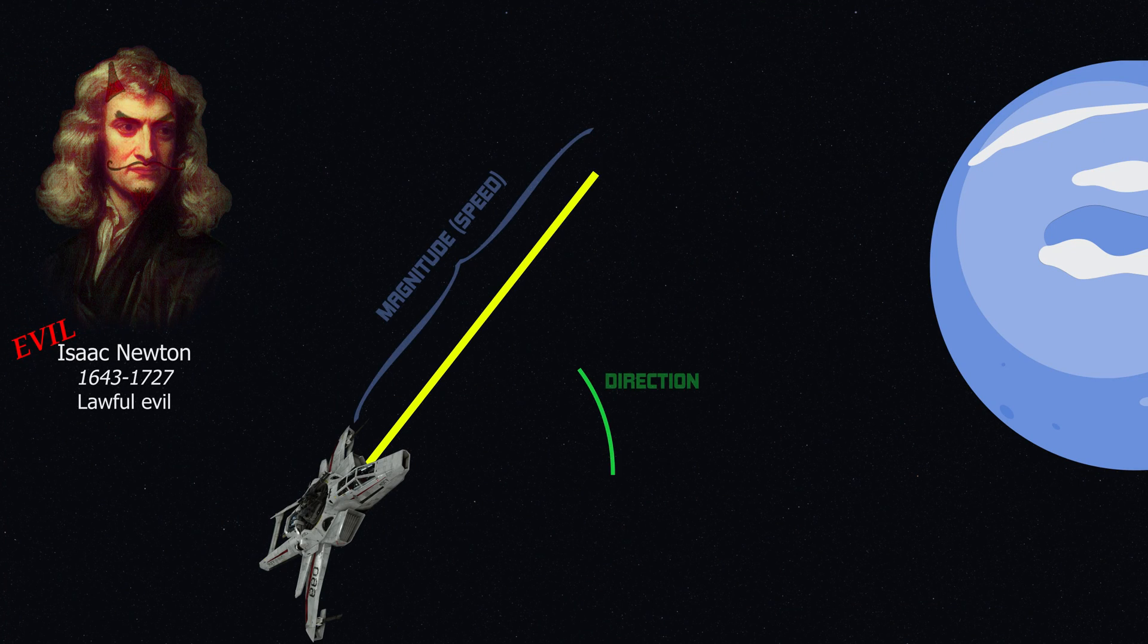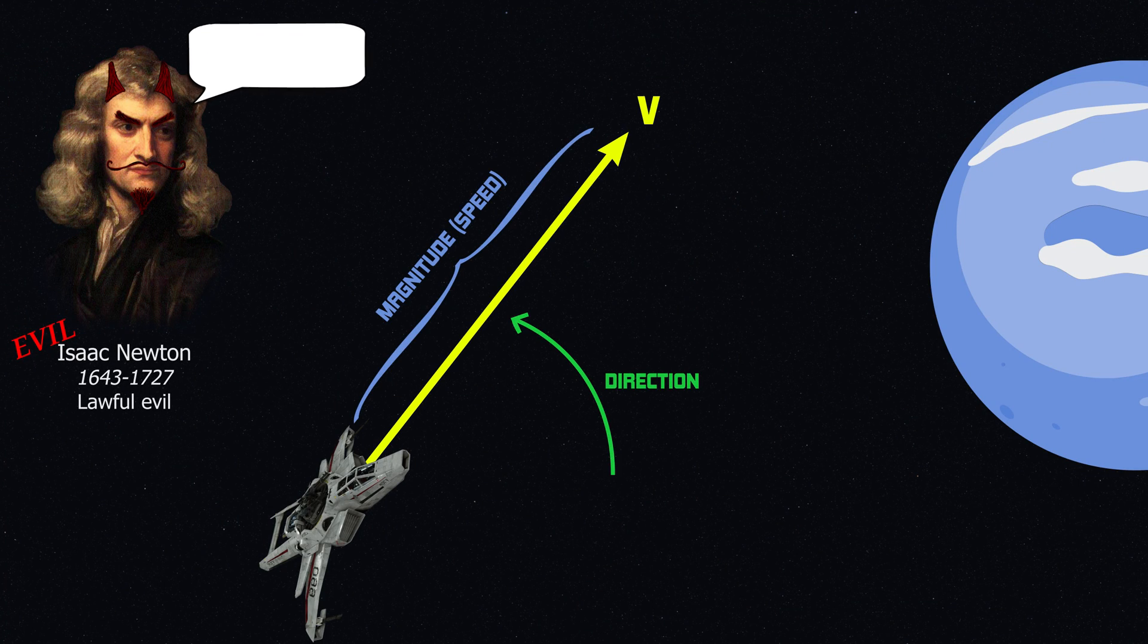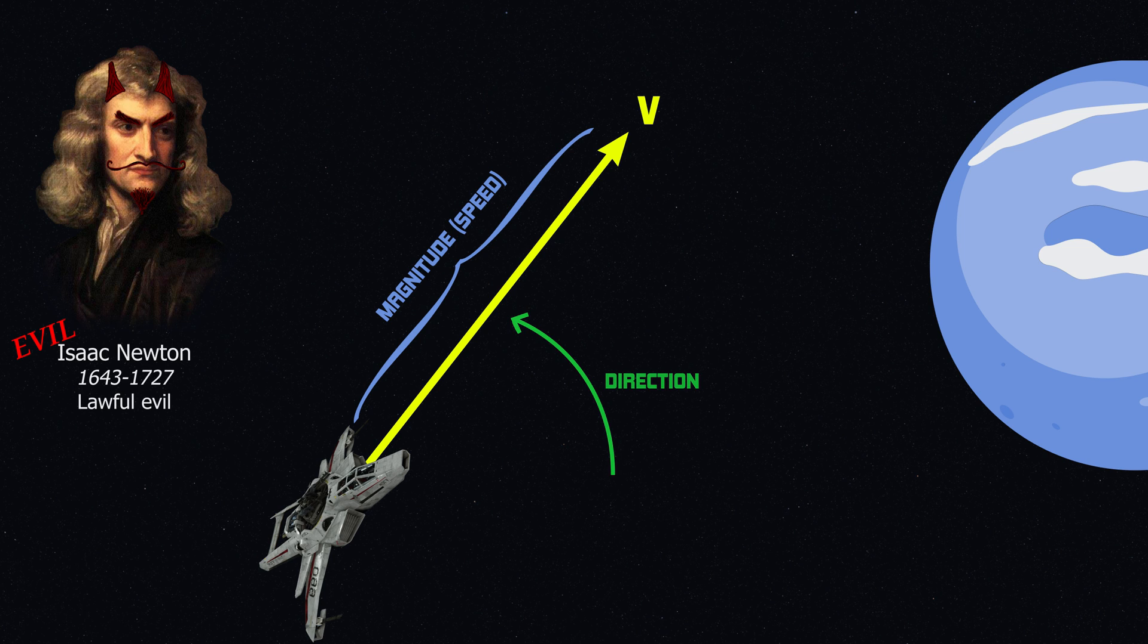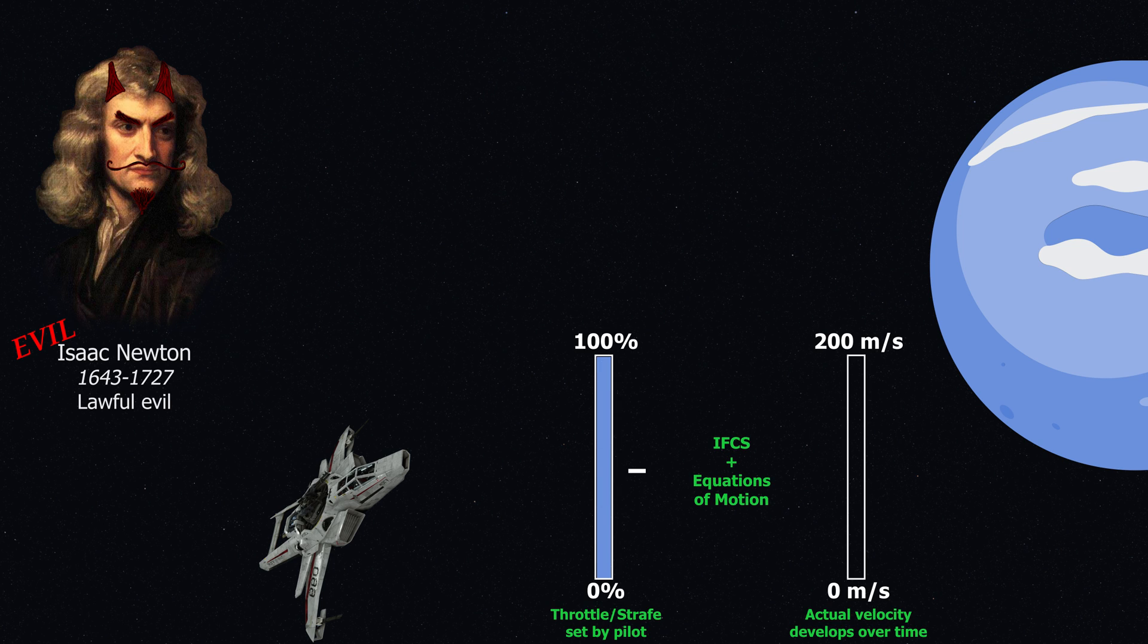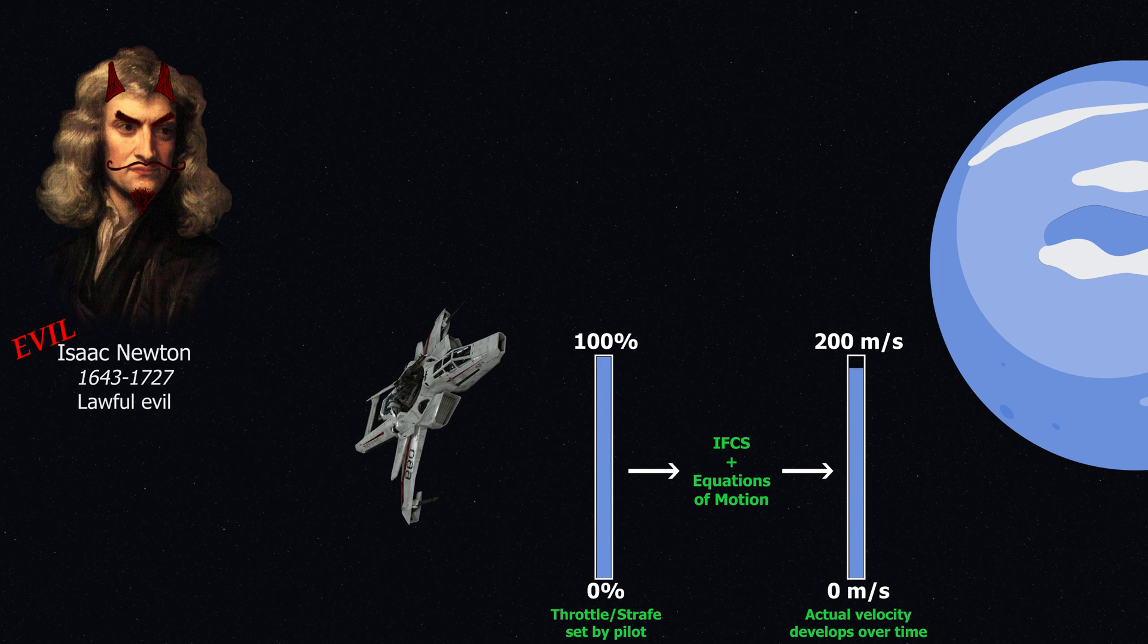A velocity vector represents a craft's current direction and speed of motion. Because of the physics realism feature of Star Citizen, velocity is never directly controlled by the pilot or the ship's computer. In other words, pushing the throttle to 100% will never instantly result in the craft moving at full speed, like in other genres.